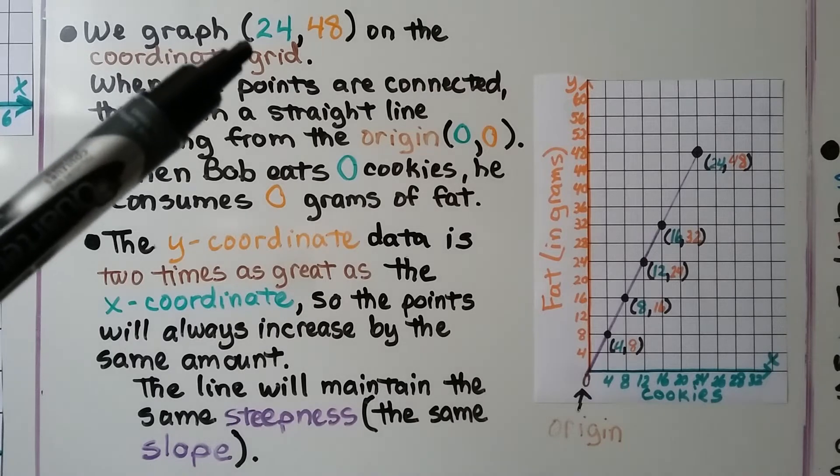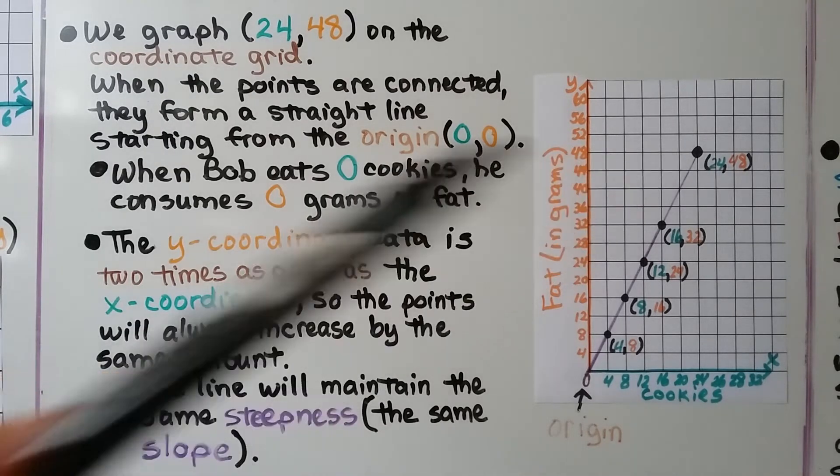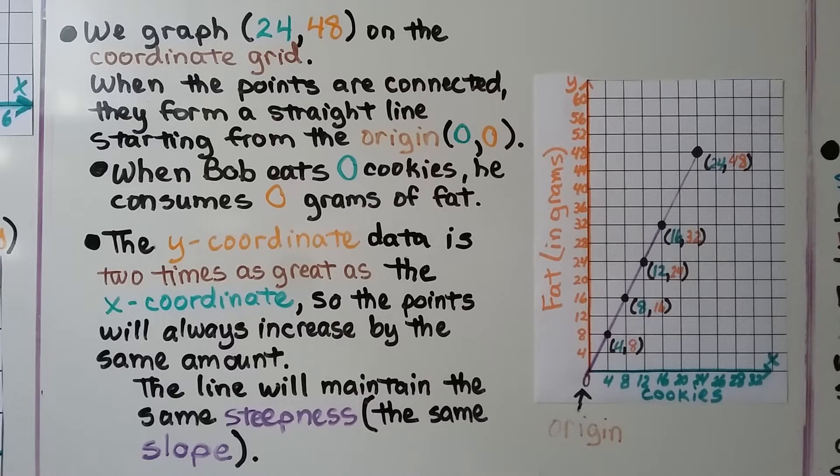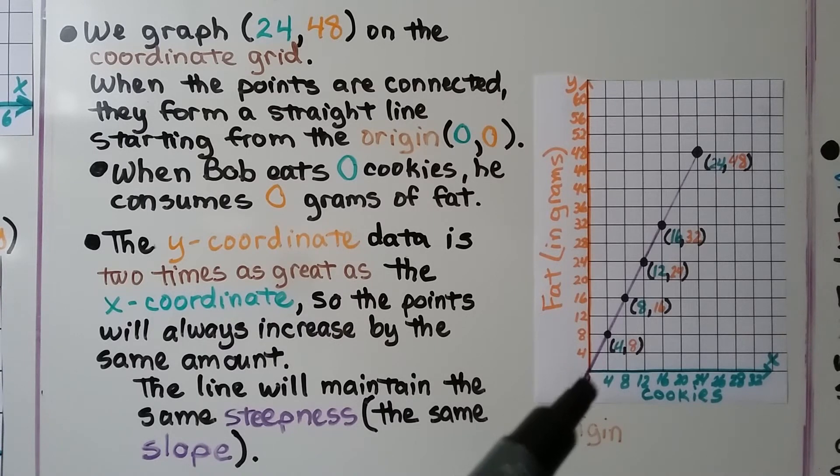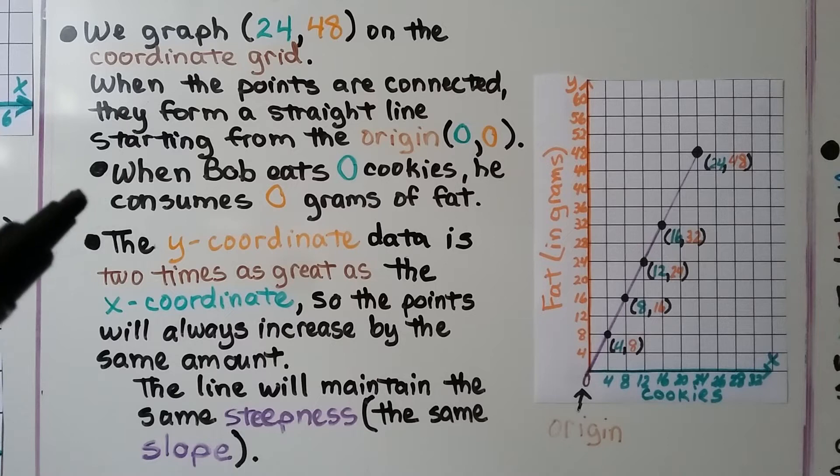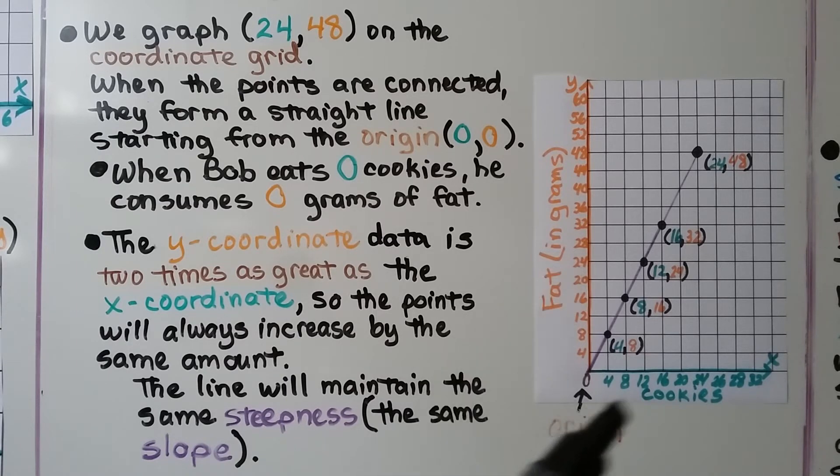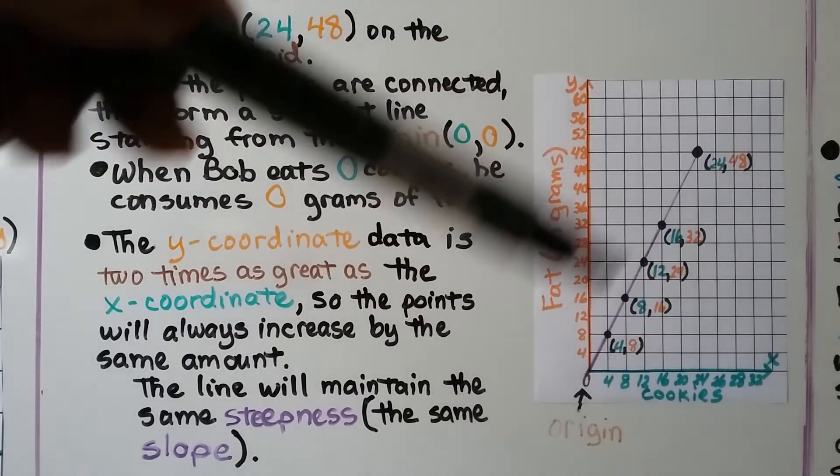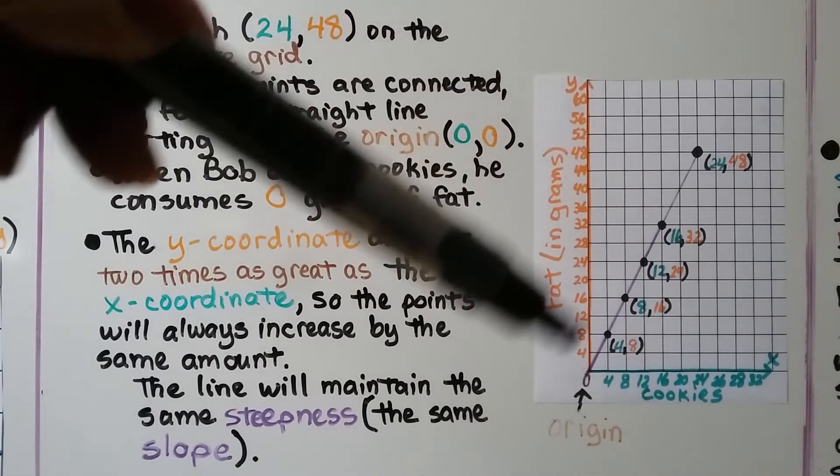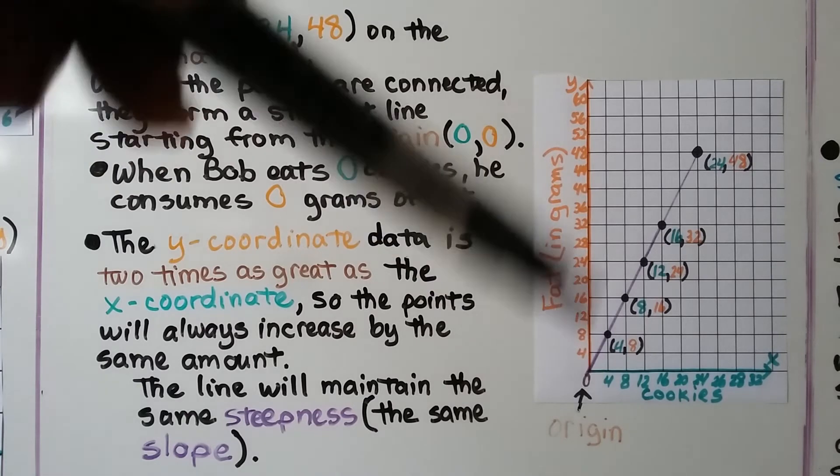We graph the ordered pair 24, 48 on the coordinate grid. And when the points are connected, they form a straight line starting from the origin 0, 0. And it starts from 0, 0 because when Bob eats 0 cookies, he consumes 0 grams of fat. And the y-coordinate data is 2 times as great as the x-coordinate. So the points will always increase by the same amount. And the line will maintain the same steepness. It's the same slope, like the slope of a mountain or a steep road.